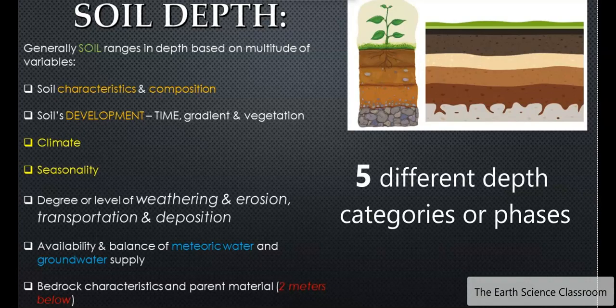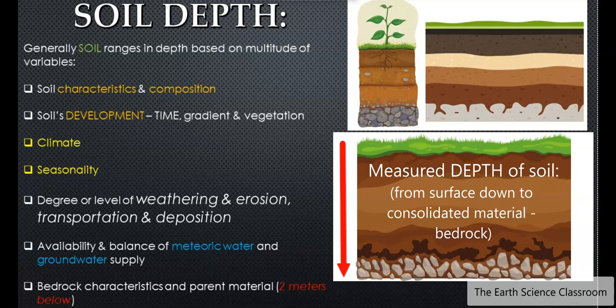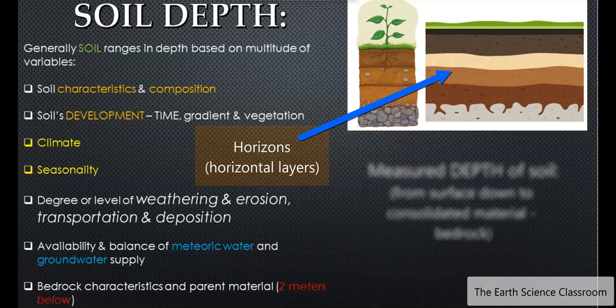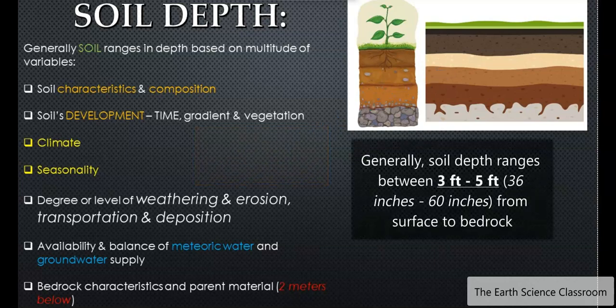So generally soil is divided into five depth phases. And the phases refer to the stages of development the soil goes through. And the deeper the soil, generally the more horizons or layers the soil is going to have. And the variables that create this soil are going to be persistent for a long time to create this very thick and diverse and multi-horizon soil.